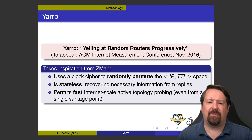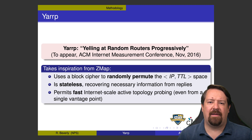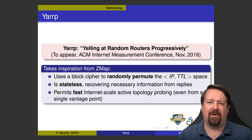Secondly, traceroute requires state to remember what outstanding probes it needs to receive back. However, YARP encodes all the information it needs into the probe packets themselves, so it doesn't have to remember state in the program — it gets all the state back in the TTL expired messages. ICMP TTL expired messages quote the original packet, so some of the information sent out by YARP comes back to it in the ICMP error message. These two features permit fast, large-scale active probing even from a single vantage point.